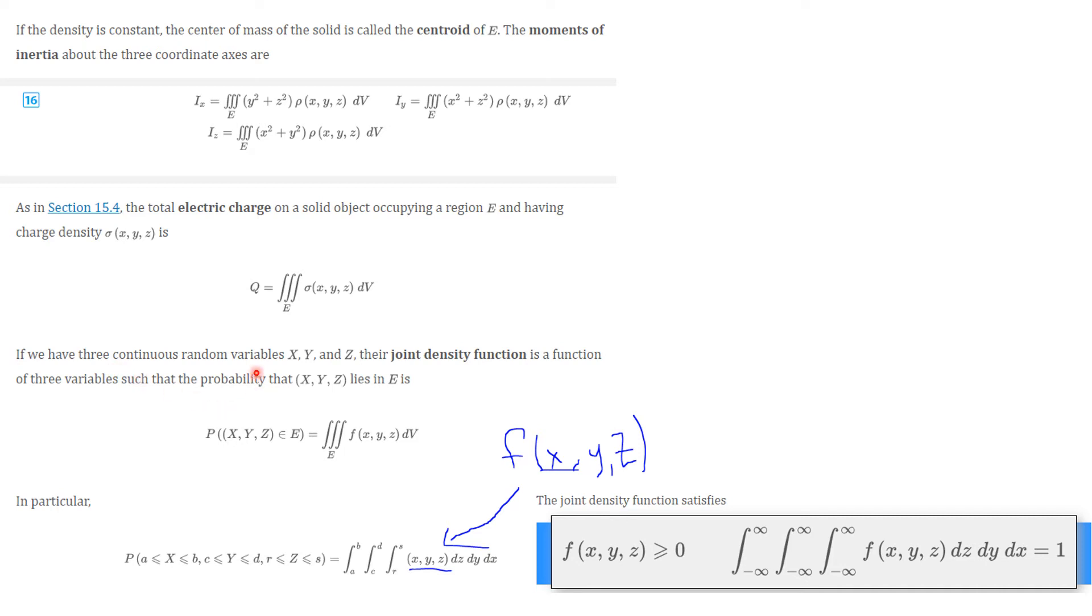And to probability theory, if we have three continuous random variables, x, y, and z, the joint probability distribution is the function such that the probability that x, y, z lies in E is given by the integral over the solid E, f of x, y, z, dv, where this f of x, y, z is a joint density function which satisfies these conditions, this one. And the total integral is equal to 1.